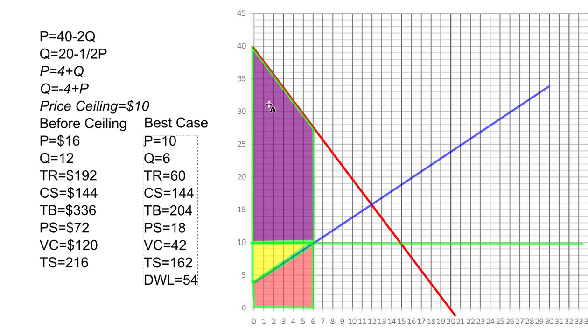After calculating all of these, I get the price will be $10 with the price ceiling, and quantity will be 6 units. Total revenue is $60, which we divide into producer surplus—the yellow—of $18 and variable costs of $42. What's interesting is I chose this price ceiling and these equations at random, but the consumer surplus is actually the same between these two. I like that because it's very clear to see where the deadweight loss comes from.